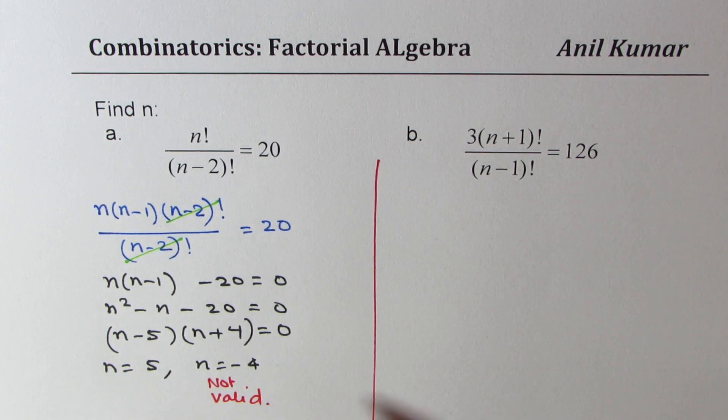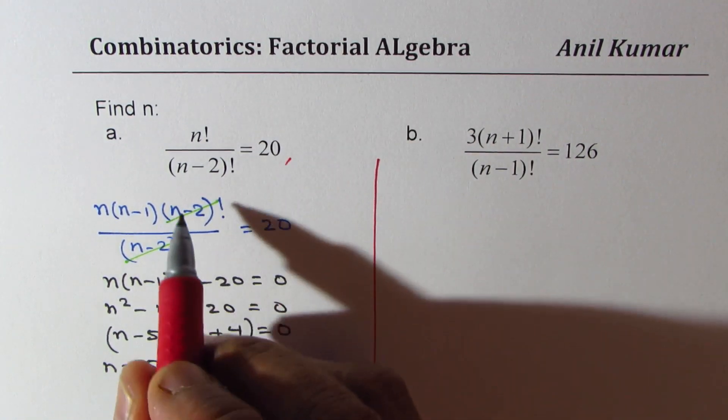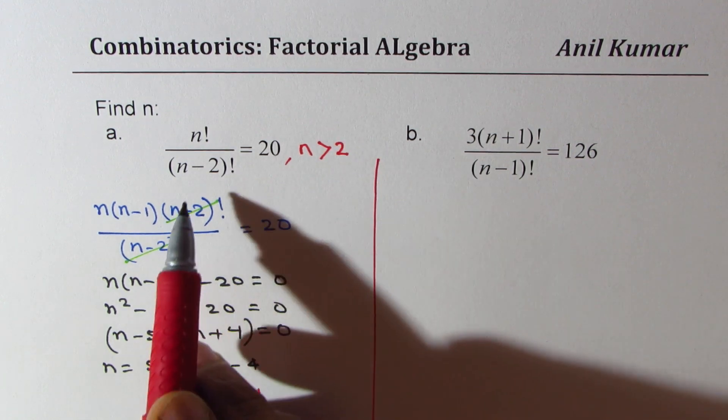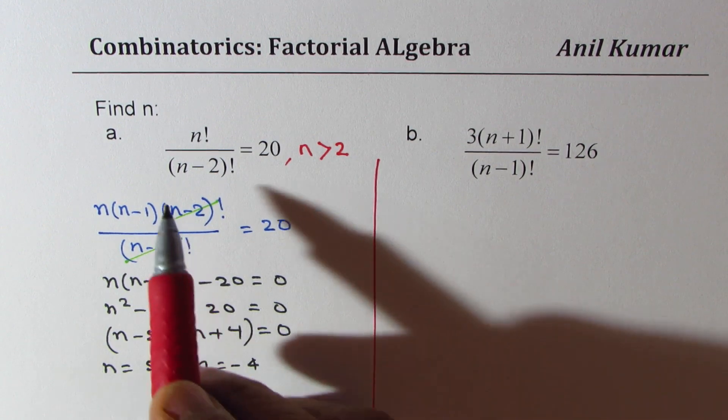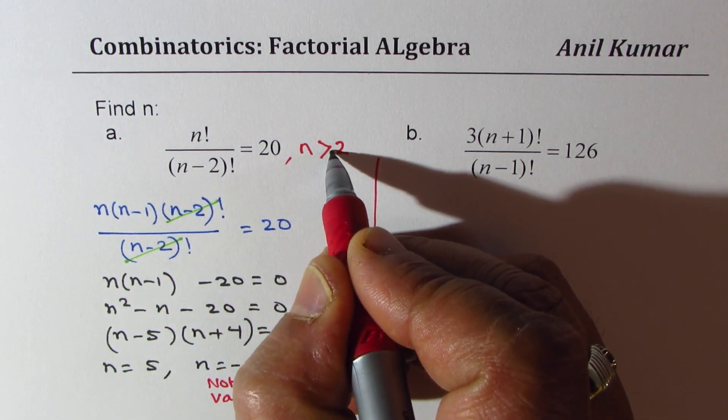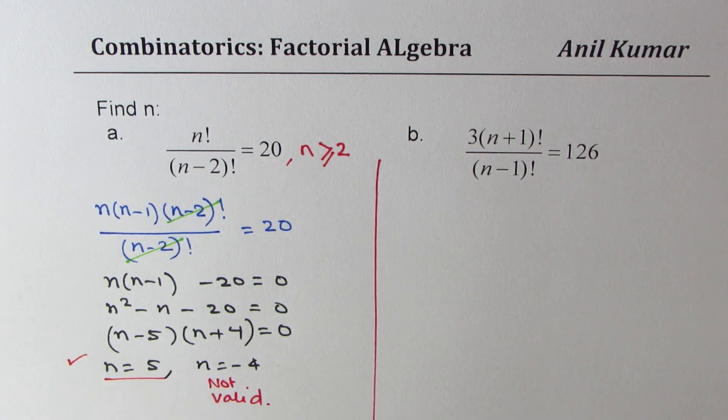Second, you have to check with the question itself. (n-2) indicates that n should be greater than 2. n could be 2 also, since 0 factorial is 1, so I could write greater than or equal to 2. So this becomes the valid answer. Our answer is n equals 5.